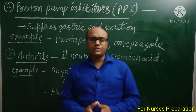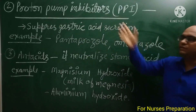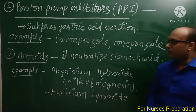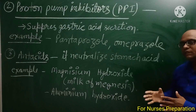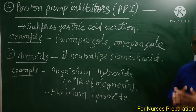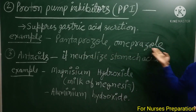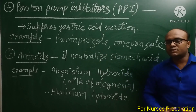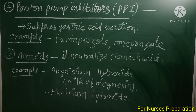Peptic ulcers के treatment में next drugs हैं proton pump inhibitors — PPIs। It suppresses gastric acid secretion। Proton pump inhibitors gastric acid secretion को suppress करती हैं। Examples हैं pantoprazole और omeprazole। Hospital settings में pantoprazole बहुत अच्छे से जानी जाती है — इसकी dose 40 mg होती है।